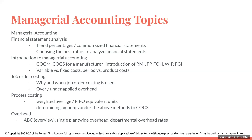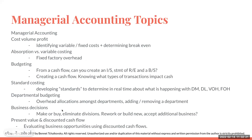Moving to the next chapter, you've got job order costing: when do we use it, how do you deal with under- or over-applied overhead, and how do we apply overhead? Then process costing: when we're doing mass production, how do we move costs from work in process to finished goods? The next chapter is overhead — specifically overhead allocation: what are the different ways of determining overhead rates?